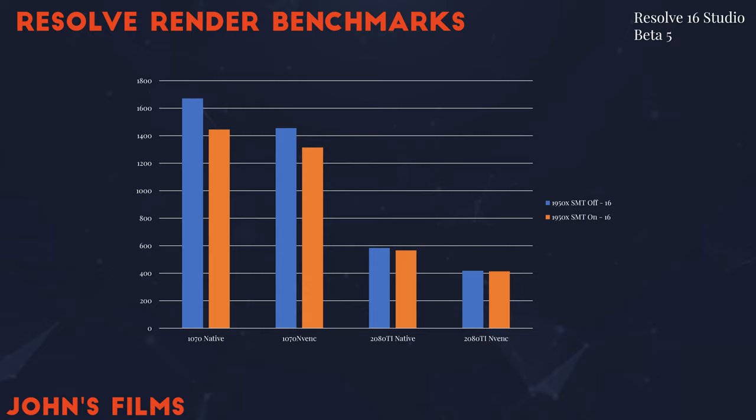So what does this mean for us? As you can see, renders get a little bit quicker when you have SMT turned on. However, the difference isn't that great, and it varies based on your workload. With the 1070, the native workload that relies heavily on the processor — not the graphics card hardware — gets about 13% faster when running with SMT on.